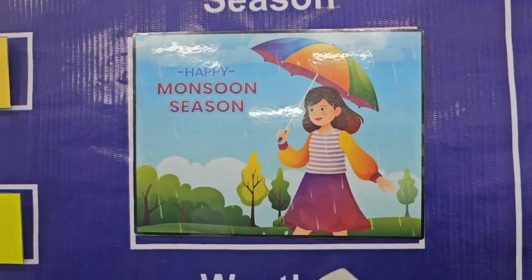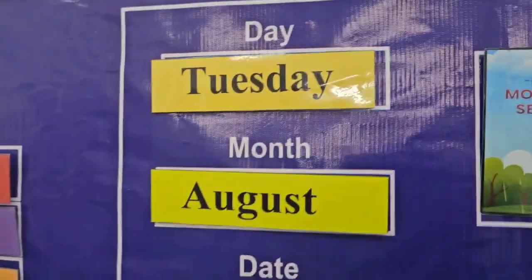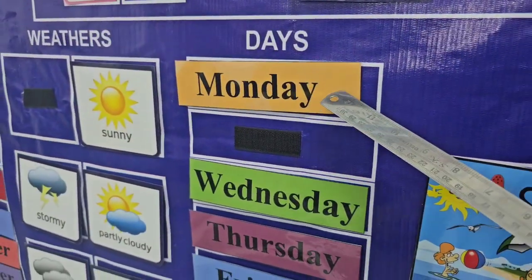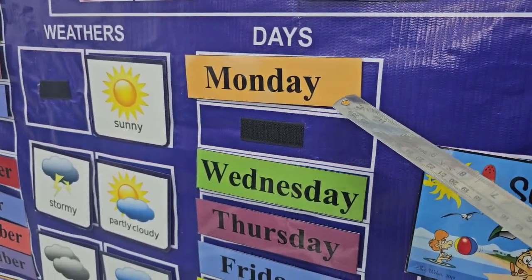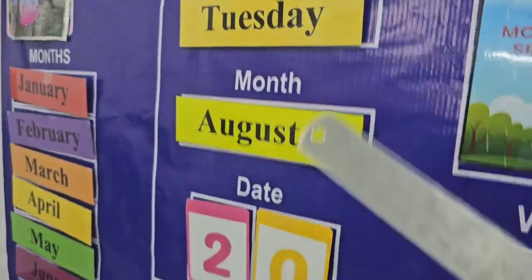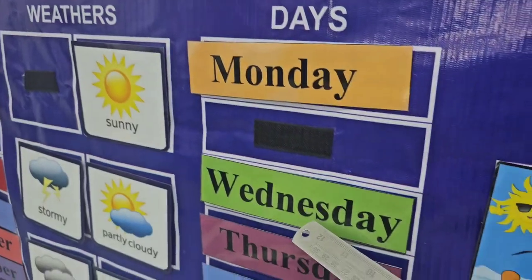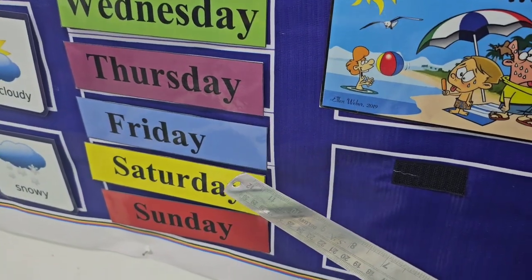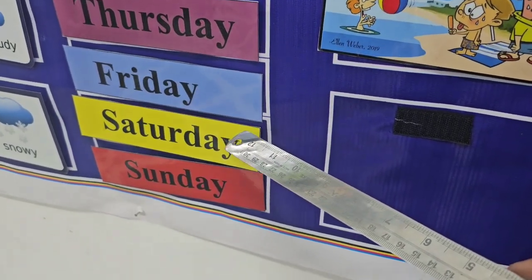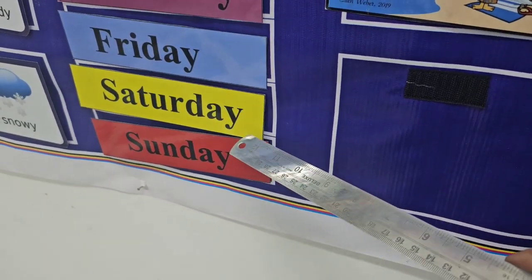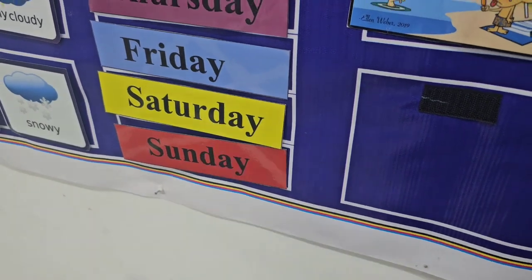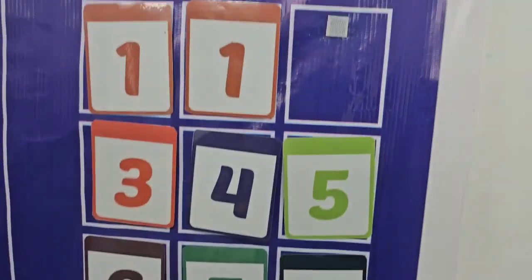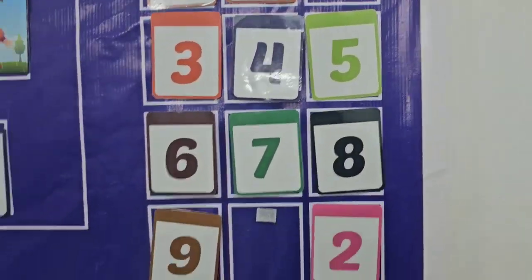Monsoon season. And days — there are 7 days in a week: Monday, Tuesday, Wednesday, Thursday, Friday, Saturday, Sunday. With this we will set today's date.